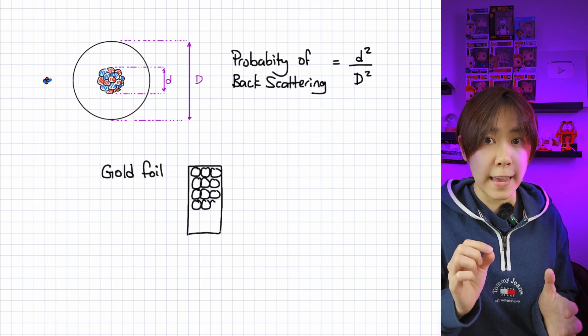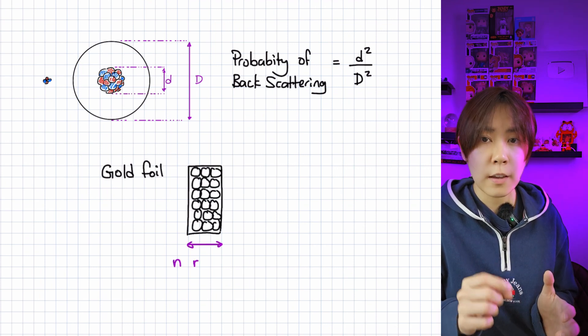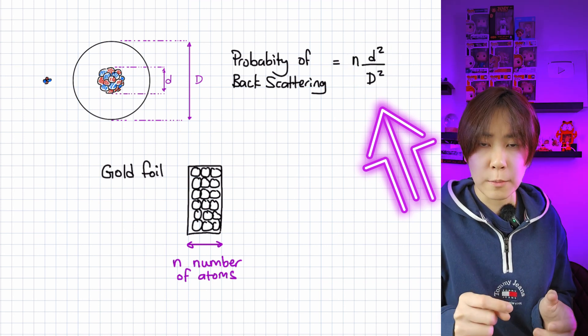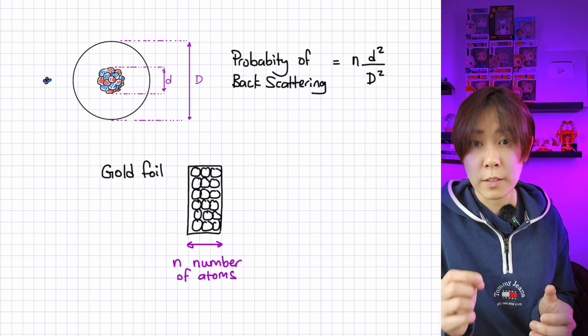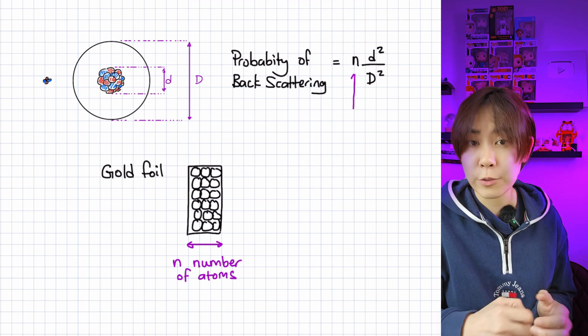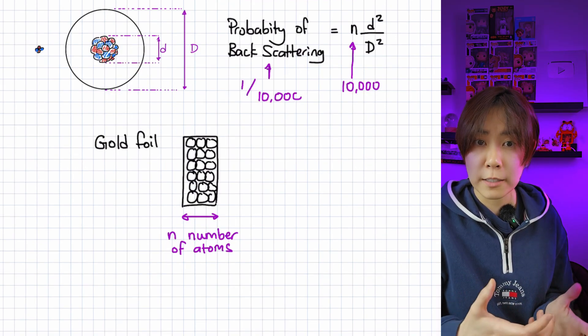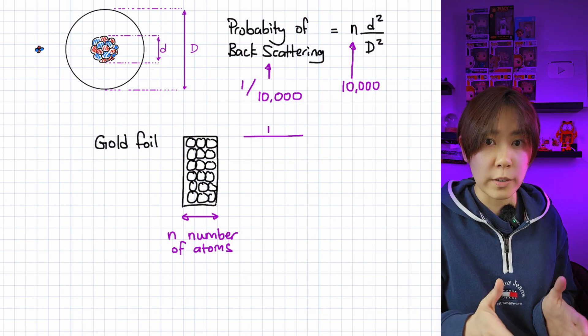But if the gold foil is n number of atoms thick, we need to multiply this fraction by n. We will make the assumption that a typical value for the number of atoms is 10,000. Let's also use Rutherford's results for the probability of backscattering, which was 1 in 10,000.